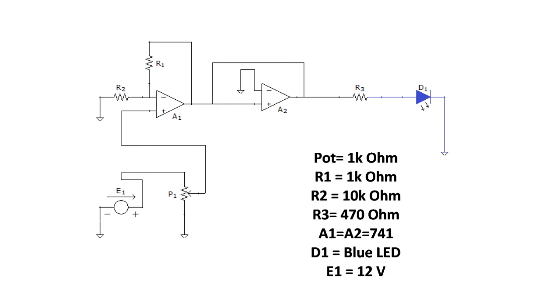And then from there, it goes into R3, which is our current limiting resistor, and then it goes into an LED.